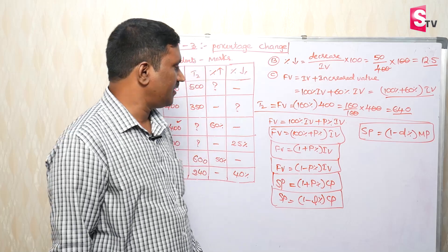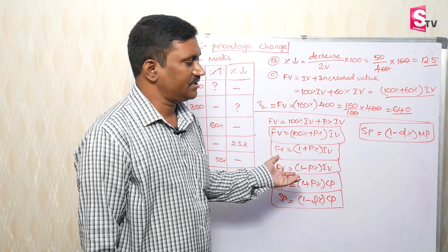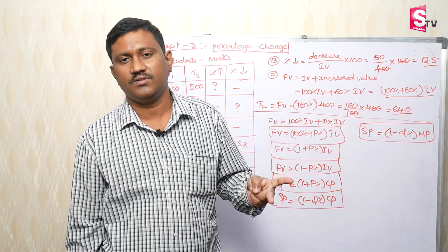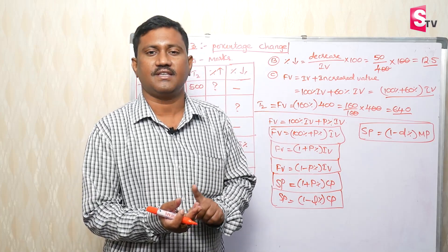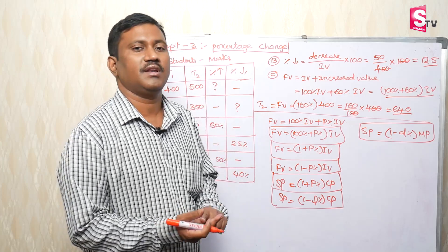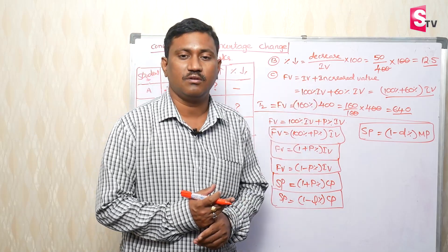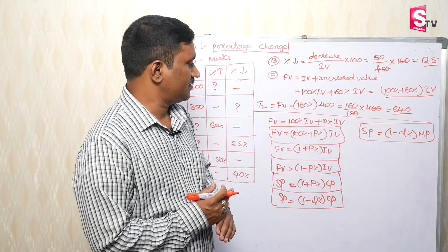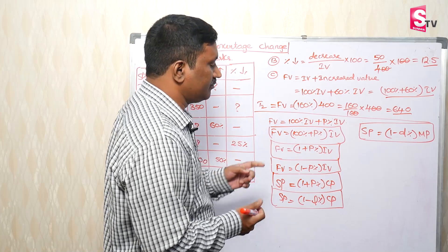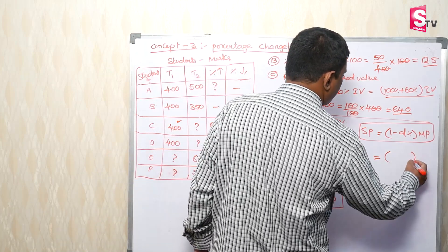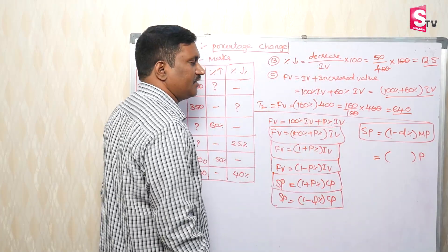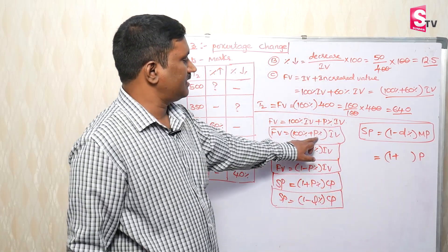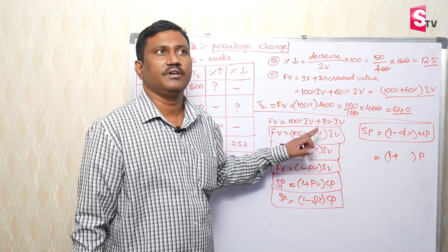The initial value can be either the cost price or the market price. If you go to market price, you get the selling price after discount. The selling price after discount gives the final price. The initial value equals 1 plus the rate and time period.